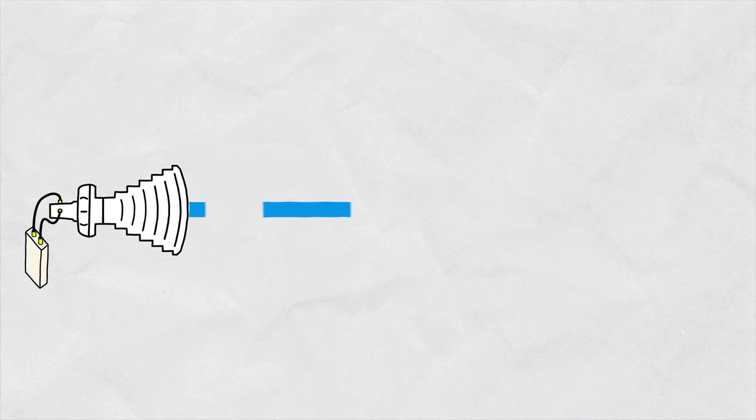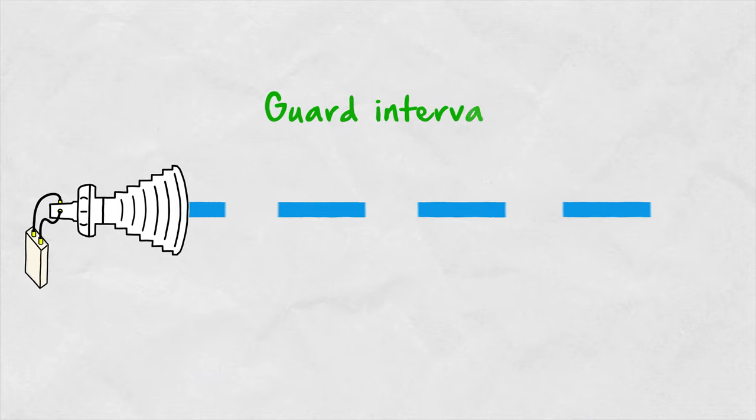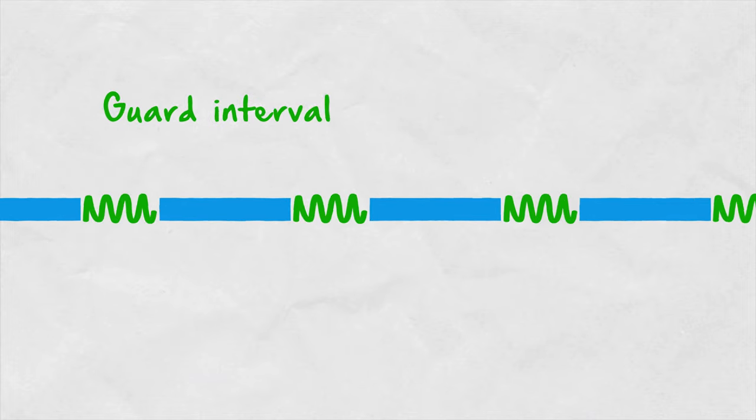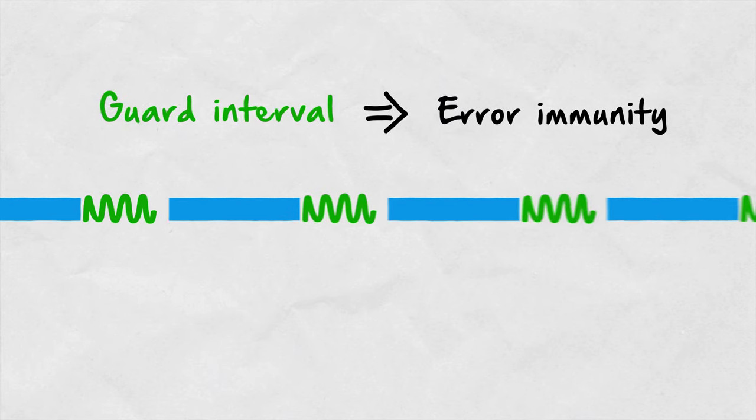Starting with 802.11a and newer standards, the guard interval is a short period of time inserted after each symbol during which a part of the data is repeated to improve error immunity. The longer the guard interval, the better the error immunity.